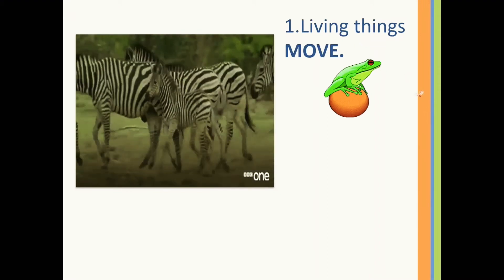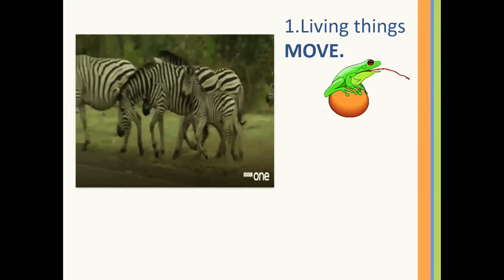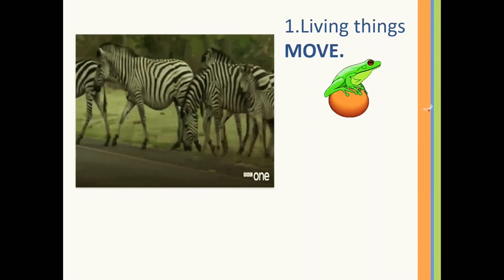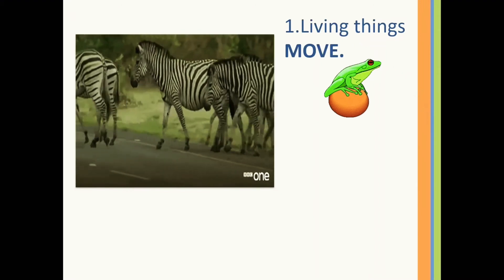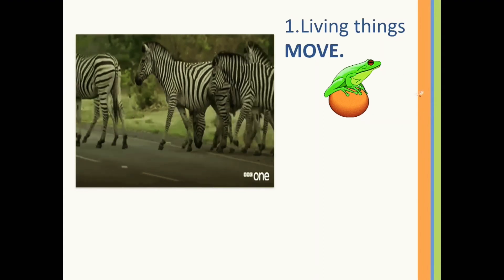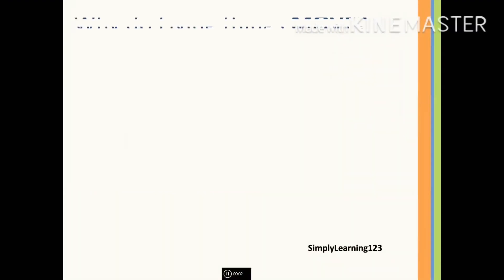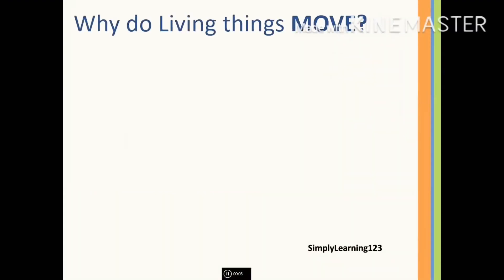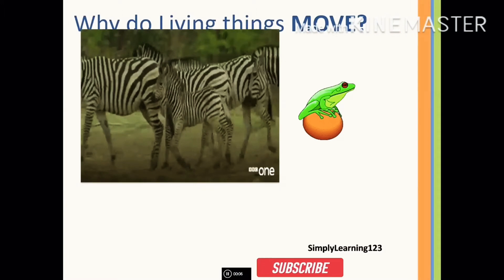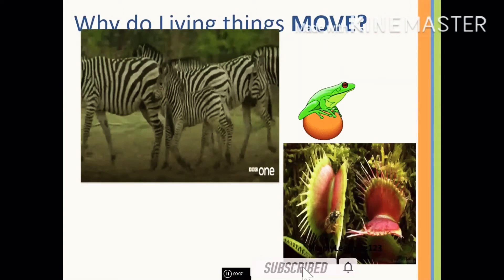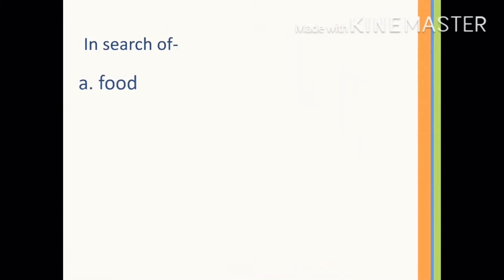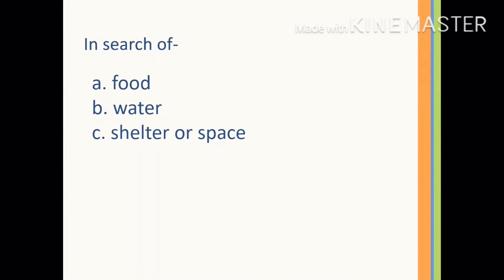Living things can move — they can move from one place to another. Why do you think living things need to move? They move in search of food, water, shelter, or space to live.